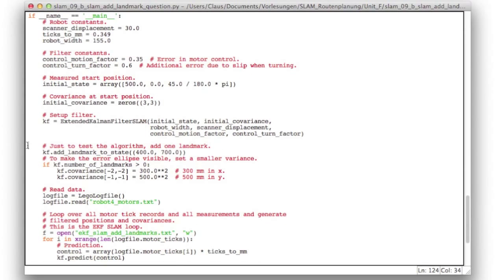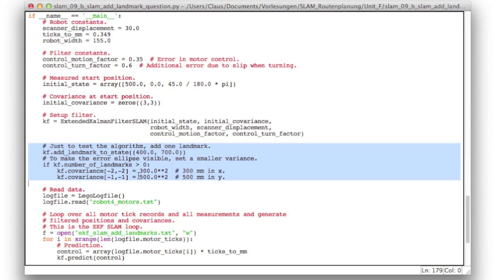Now down here in the main function, here is one addition. Since we do not yet have the code to add landmarks automatically whenever our robot sees a new one, we just add one manually, namely at the position 400, 700.